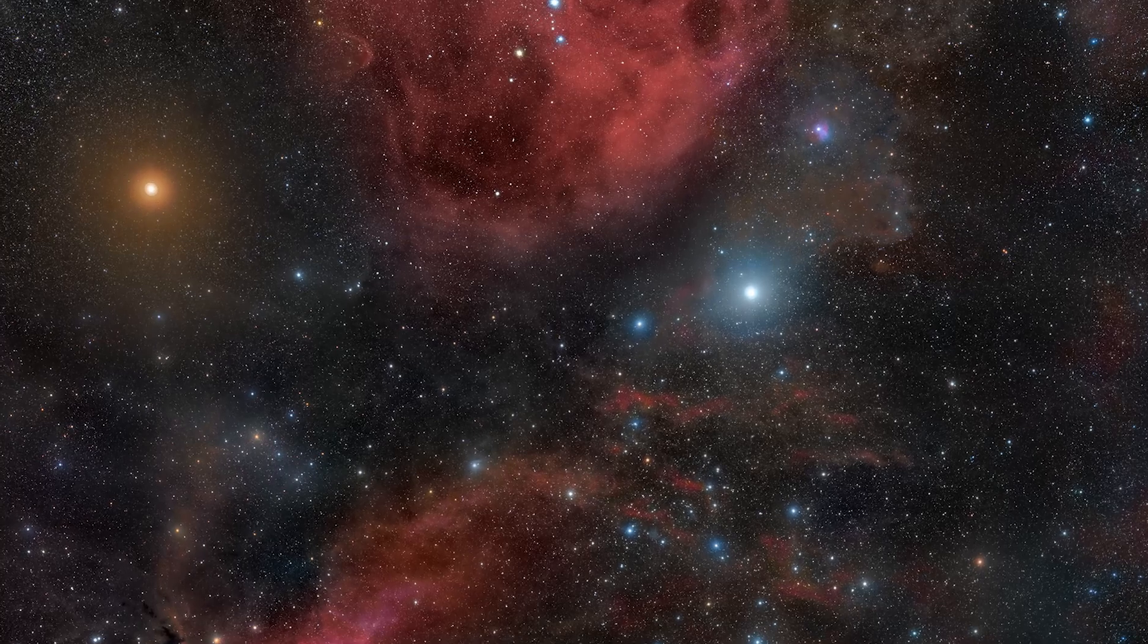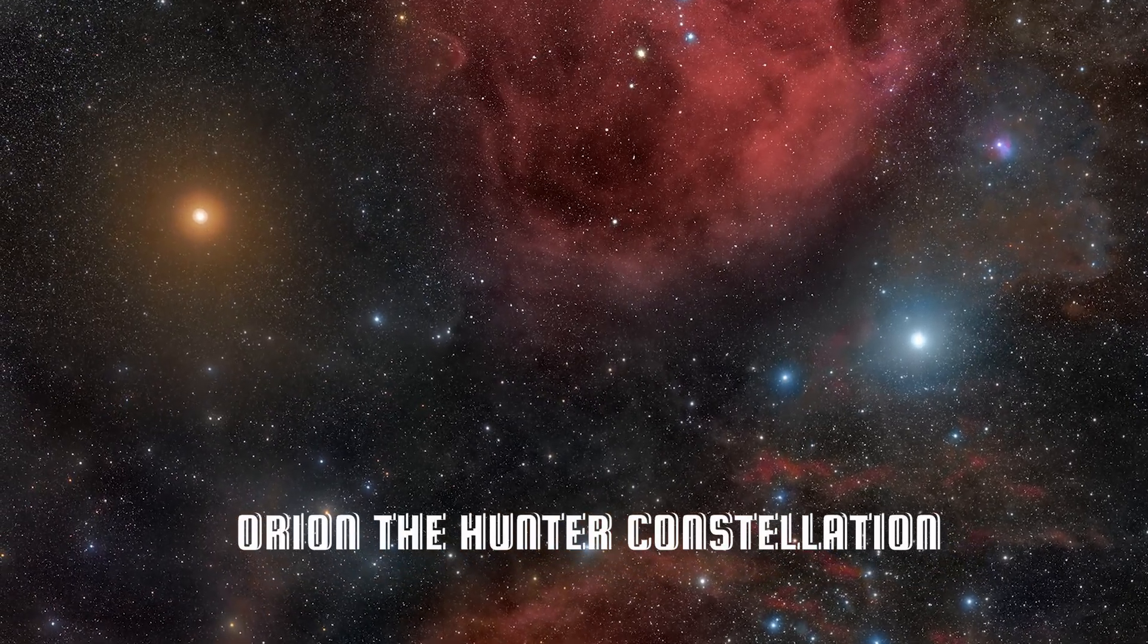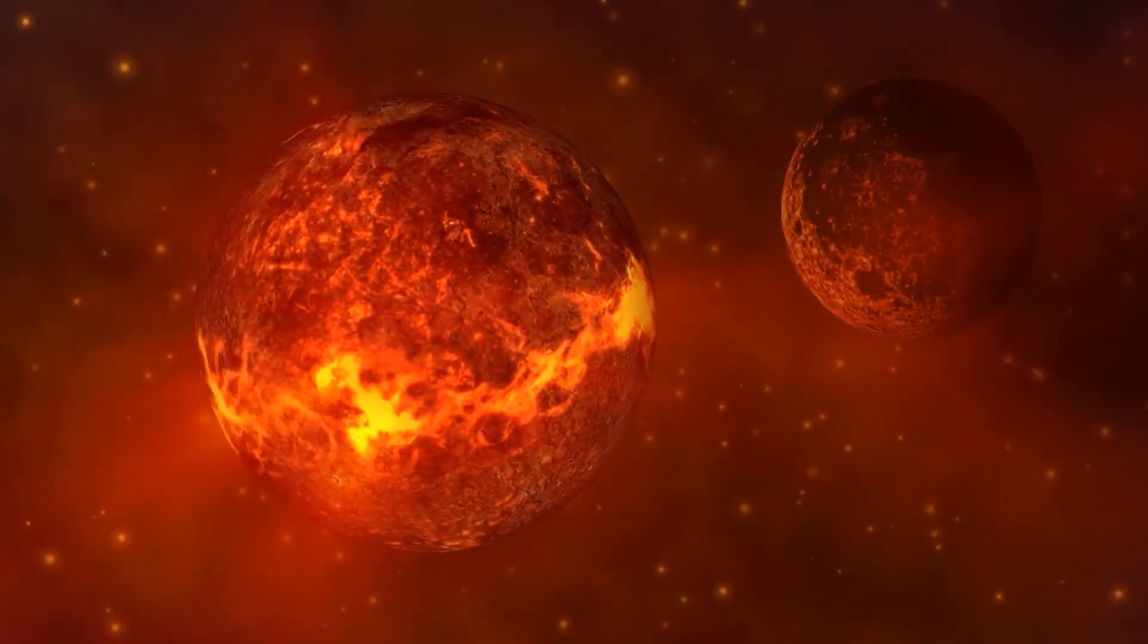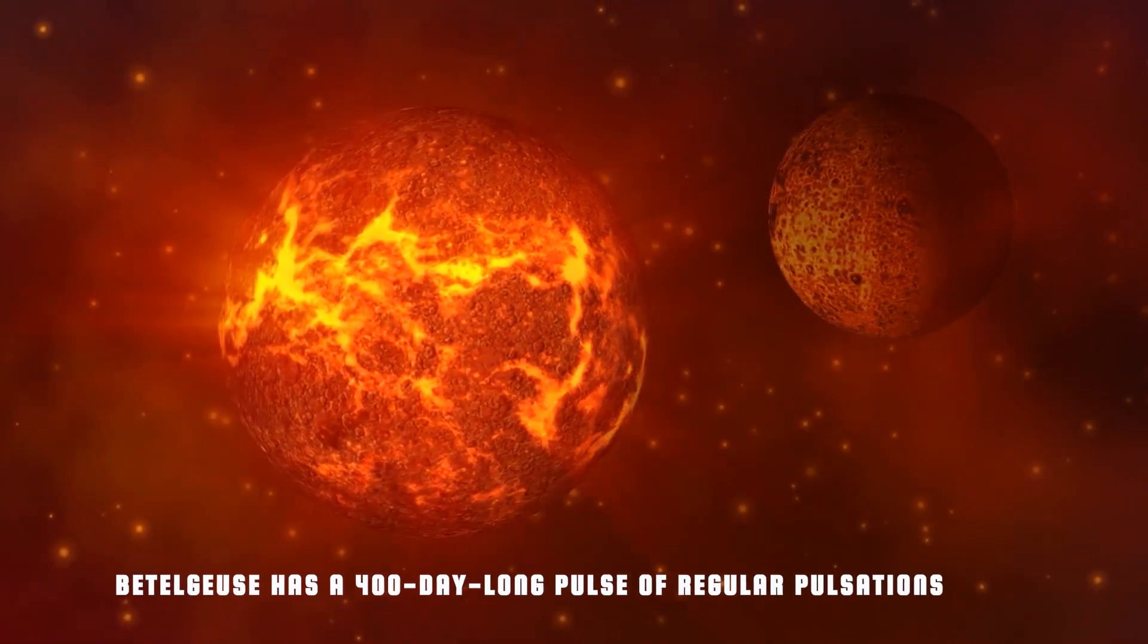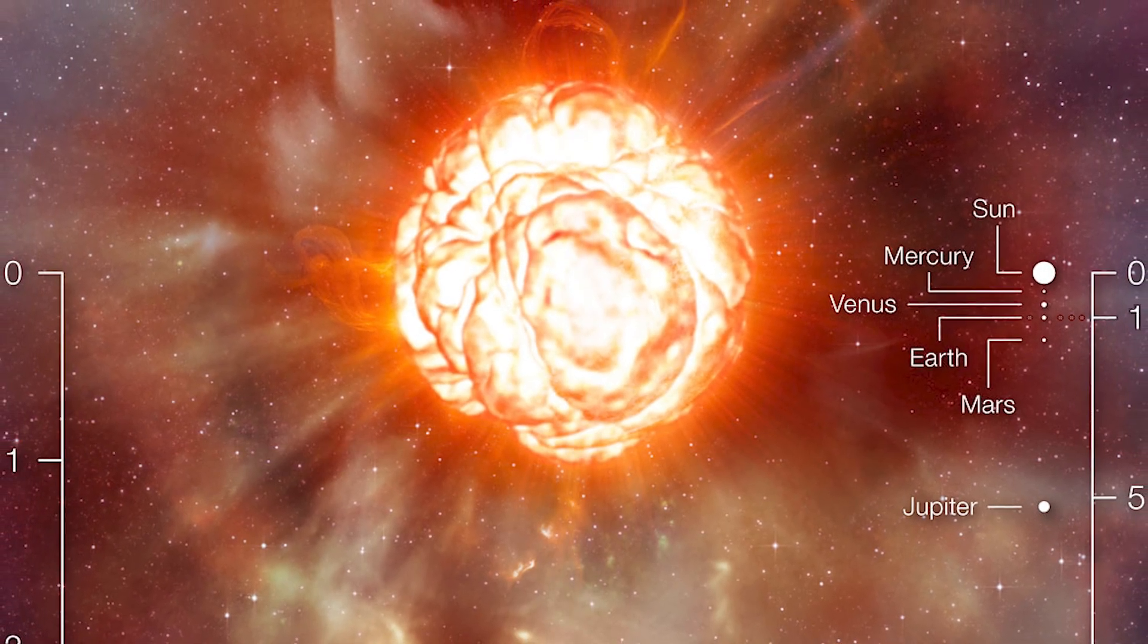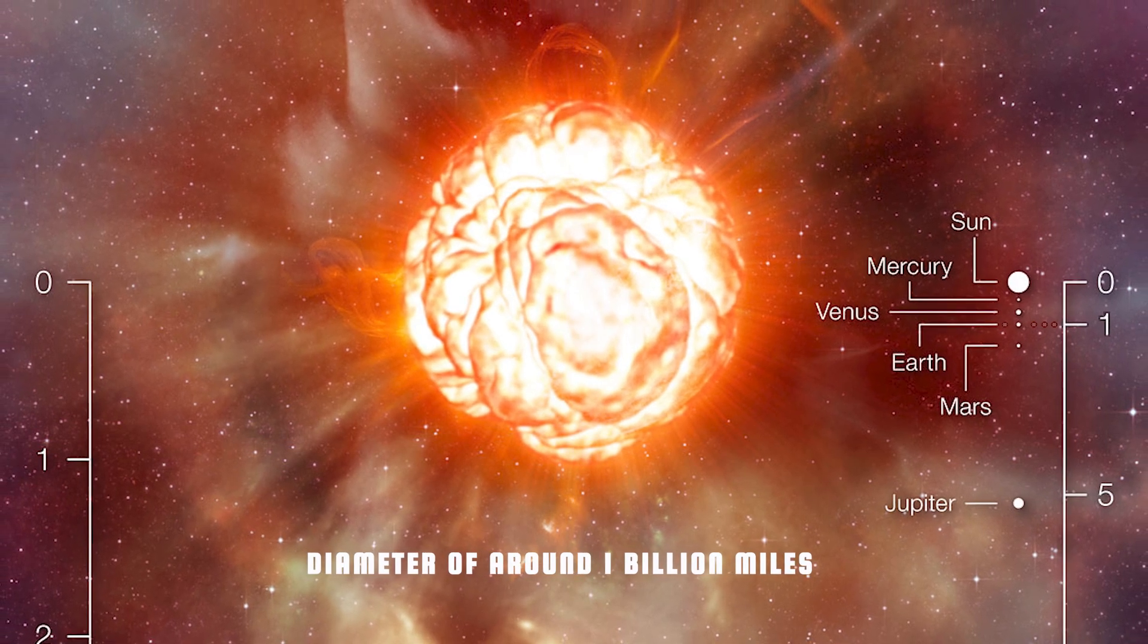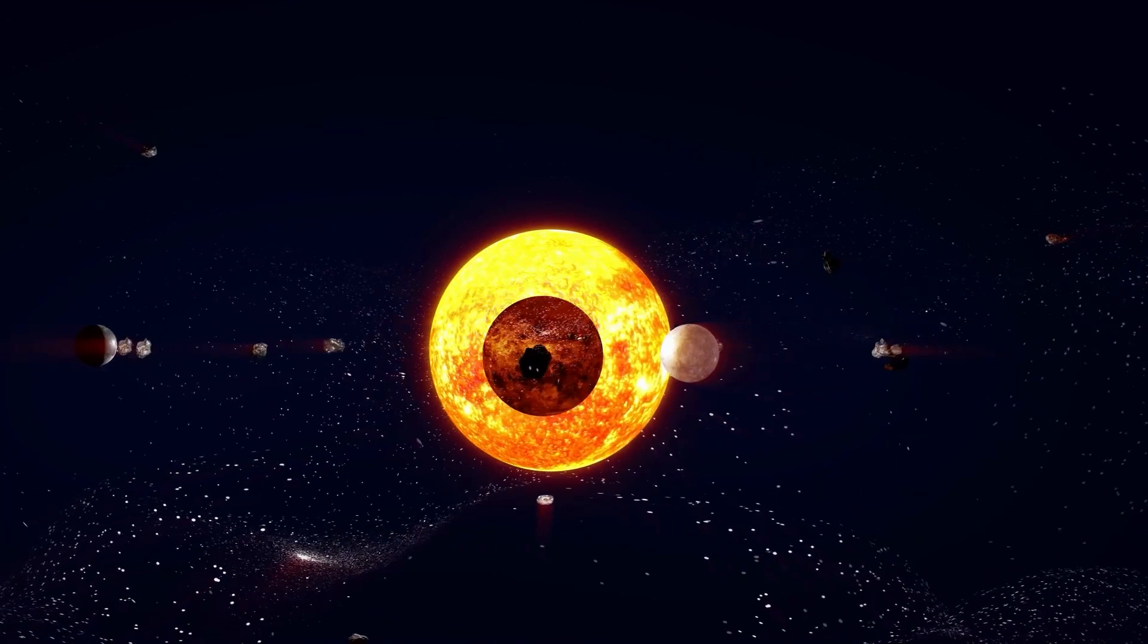Betelgeuse appears as a dazzling, ruby-red, sparkling pinpoint of light on the upper-right shoulder of the hunter in the winter sky. Close inspection reveals it to be a seething beast with a 400-day-long pulse of regular pulsations. This aging star is classed as a supergiant because it has grown to an incredible diameter of around 1 billion miles. If put at the center of our solar system, it would reach Jupiter's orbit.